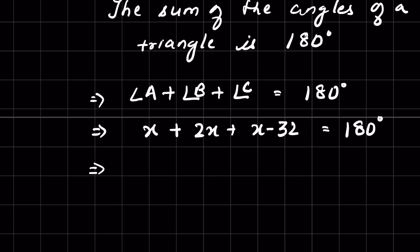Now we have a linear equation. Add the variables: x plus 2x plus x is 4x minus 32 equals 180. Or we send minus 32 to the right hand side, it will be positive 32.